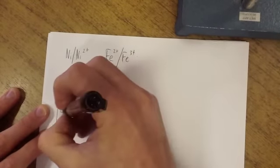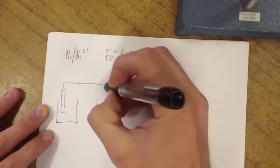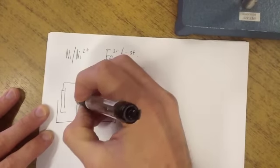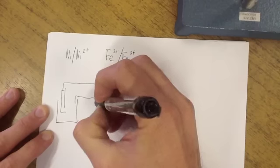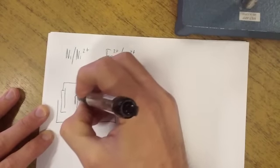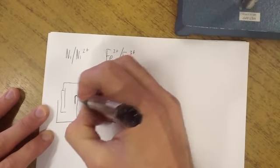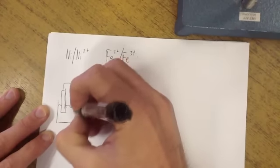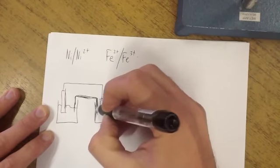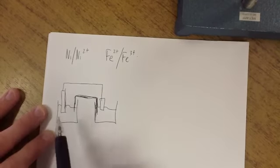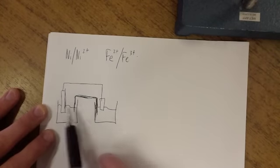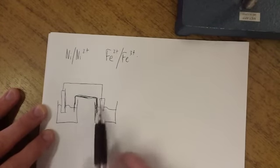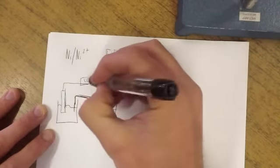Galvanic cell looks like this, okay, where we have two beakers or two half cells connected with a salt bridge. No matter what the half cell, no matter what it is, you'll always draw it similar to this. Really simple, being two beakers and two electrodes connected by a wire, with here being the voltmeter up the top.